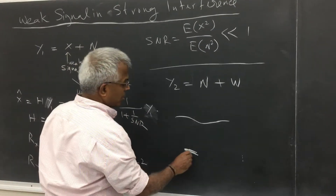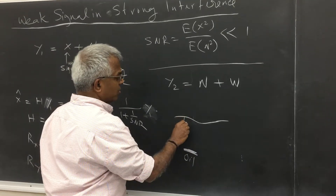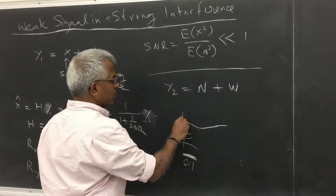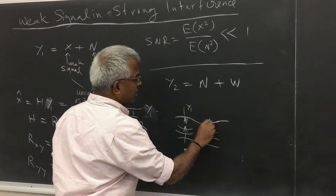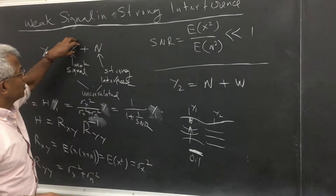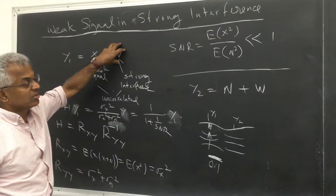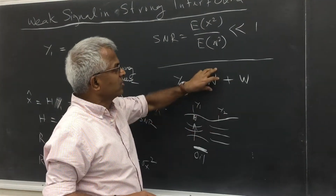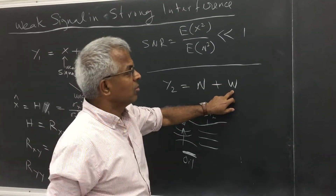In terms of oil exploration, you blast some dynamite so waves go in and come back. You have sensors placed, and you get data of this form — maybe the oil signal plus all sorts of geological signals. Otherwise it is just the surrounding signals, or the interference associated with weak noise.